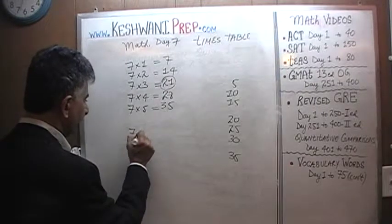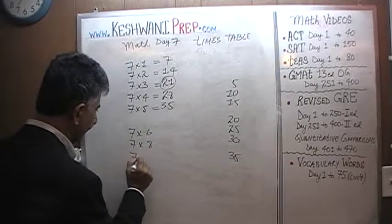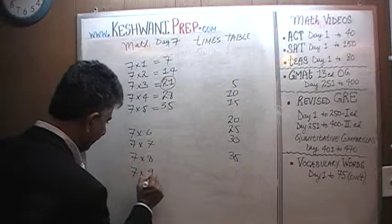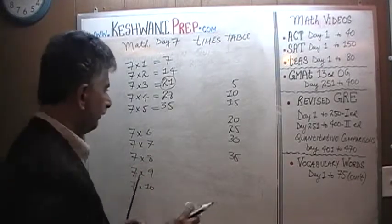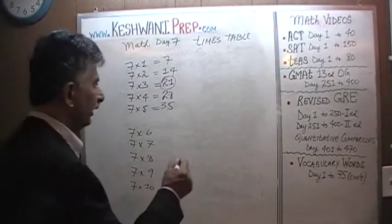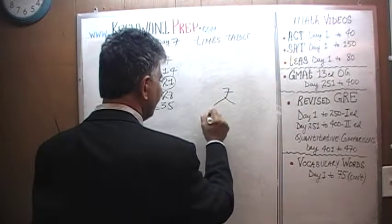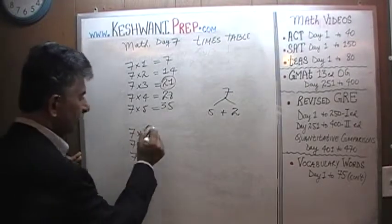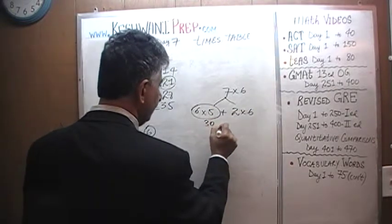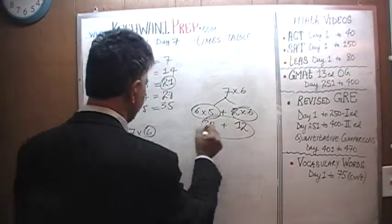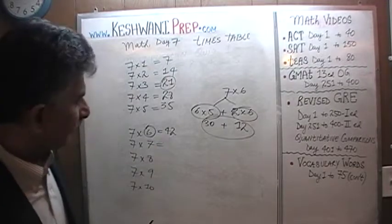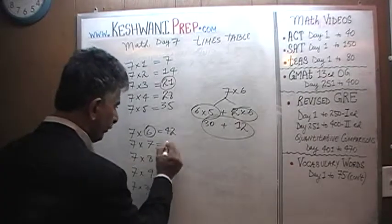Let's continue: 7 sixes, 7 sevens — oh, we missed 7 sevens, didn't we — 7 eights, 7 nines, and finally 7 tens. We need 7 sixes. Again, we look at 7 as 5 plus 2, and we need 6 of them. 6 fives is 30 and 2 sixes is 12. 30 plus 12 is 42. For 7 sevens it's just 7 more than before: 42 plus 7 is 49.